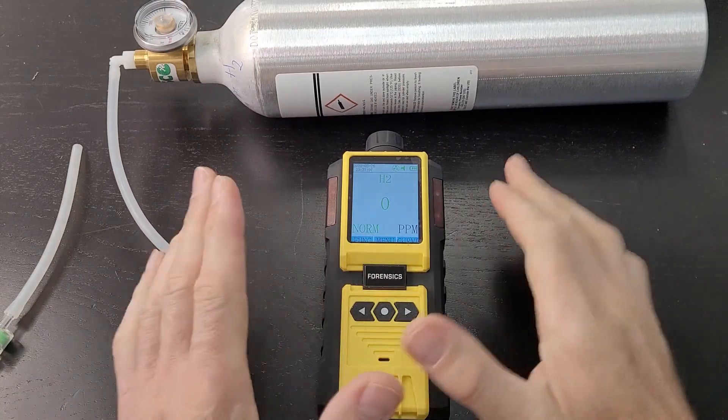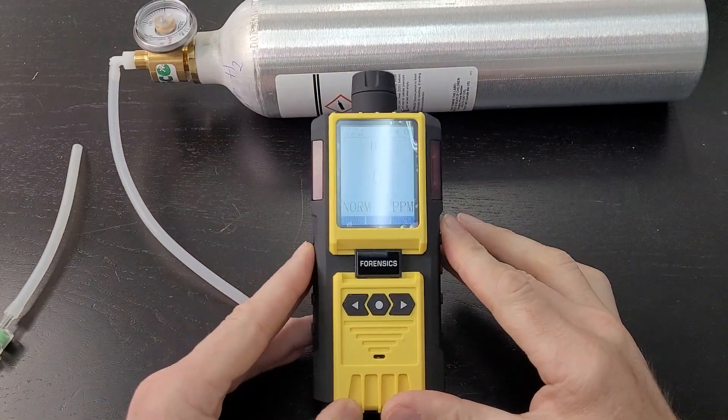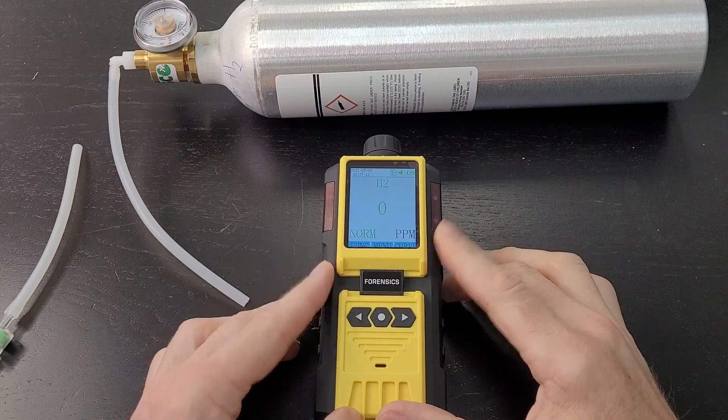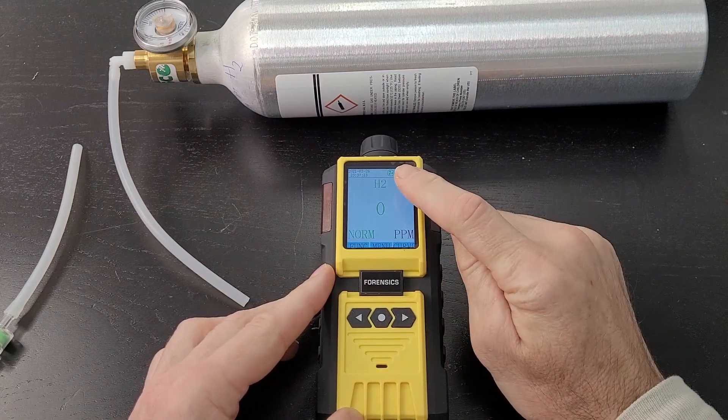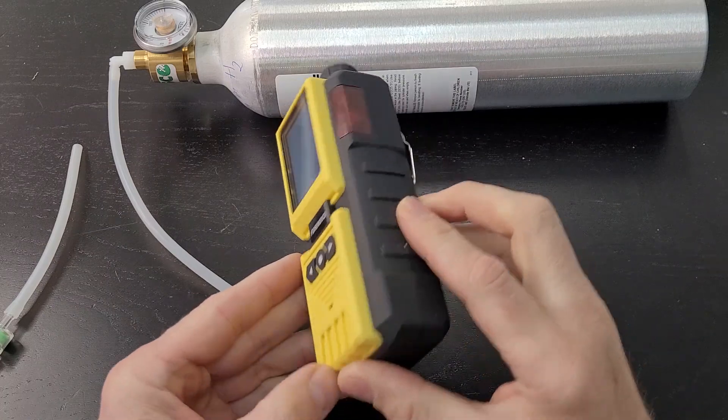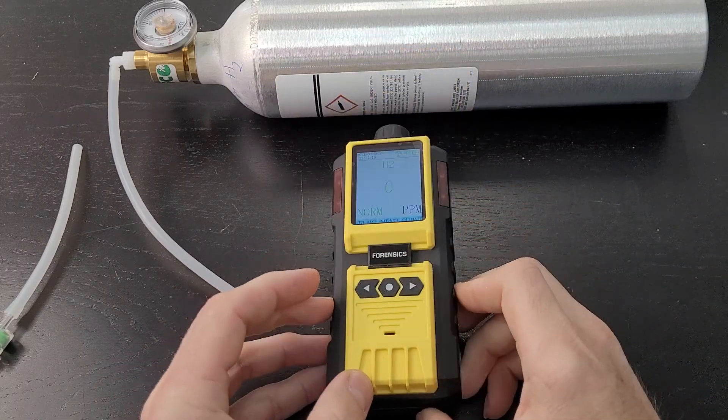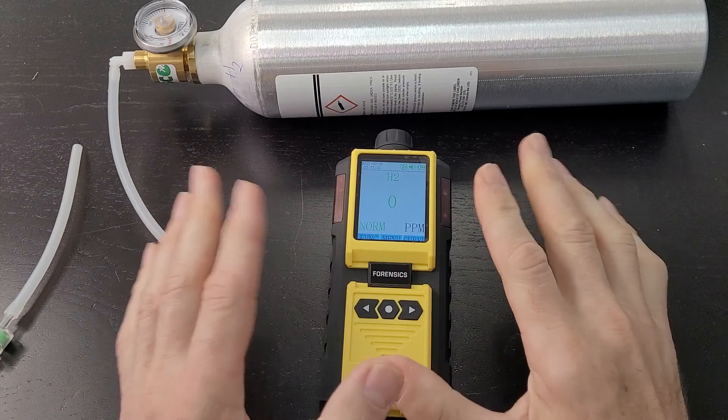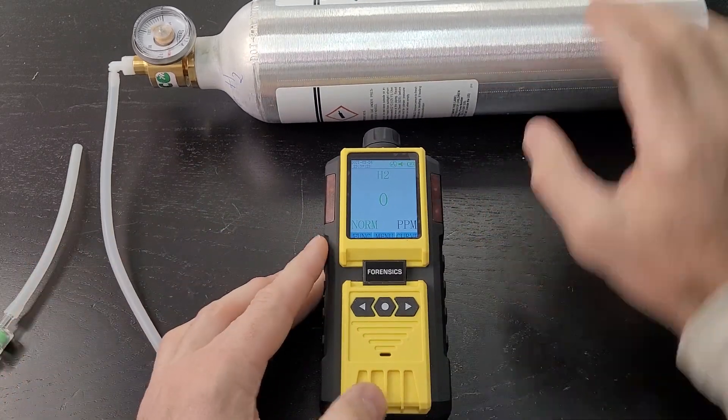Welcome to our calibration of the Model 600. Today we are calibrating the hydrogen H2 Model 600. As you can see, this is the Model 600. The pump is running, so first things first, as you may know...